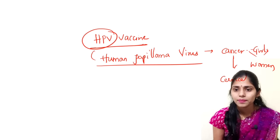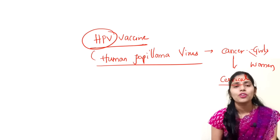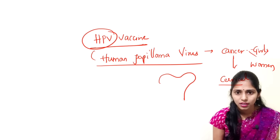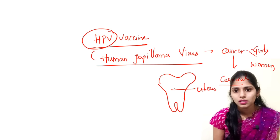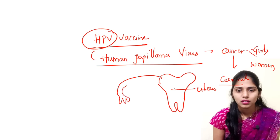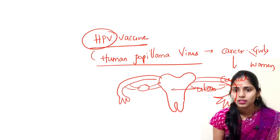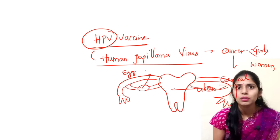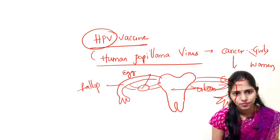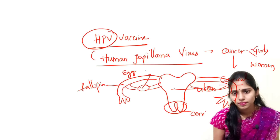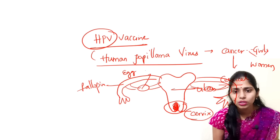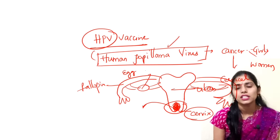The HPV virus causes cervical cancer. To understand where the cervix is, you need to know the reproductive system of women — it includes the uterus, two fallopian tubes, and ovaries. The cervix is the lower part of the uterus. There will be abnormal growth of cells in the cervix due to this viral infection — HPV virus — and this is responsible for cervical cancer.